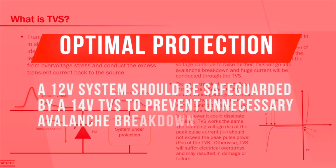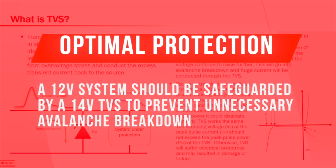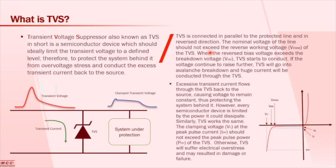For example, a 12-volt line should be protected by a 14-volt TVS in order to make sure the TVS does not go into the avalanche breakdown stage.